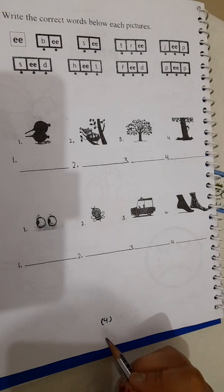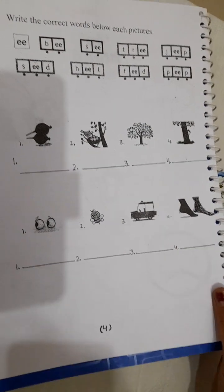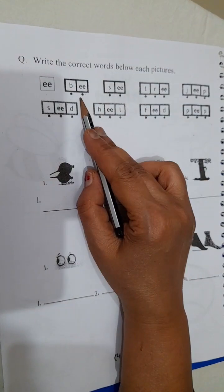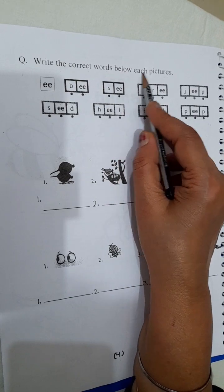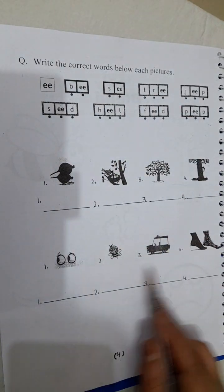Okay children, we are going to see now page number 4. Few words are given. Write the correct words below each picture. Here some pictures are given.